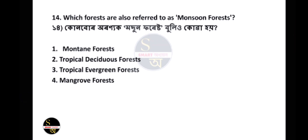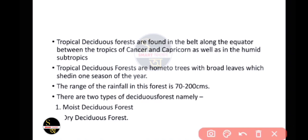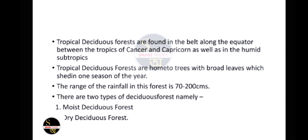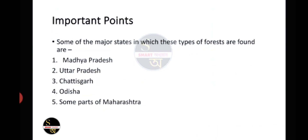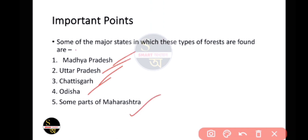Question number 14: Which forests are also referred to as Monsoon forests? The answer is Tropical Deciduous Forests. Tropical deciduous forests are found in the belt along the equator, between the Tropics of Cancer and Capricorn, as well as in the humid subtropics. The range of rainfall in these forests is 70 to 200 cm. There are two types: Moist Deciduous Forest and Dry Deciduous Forest.